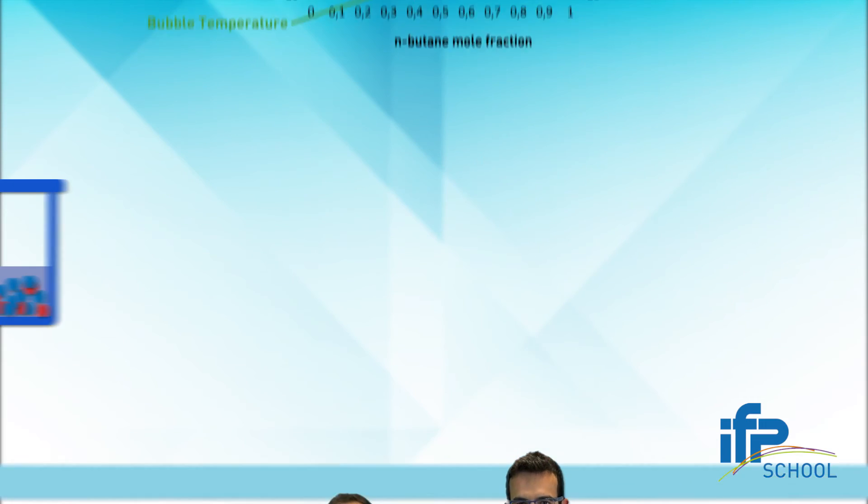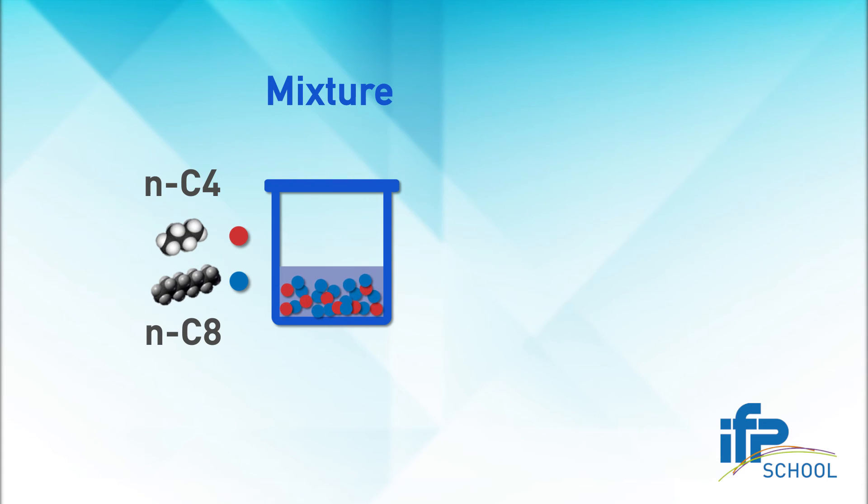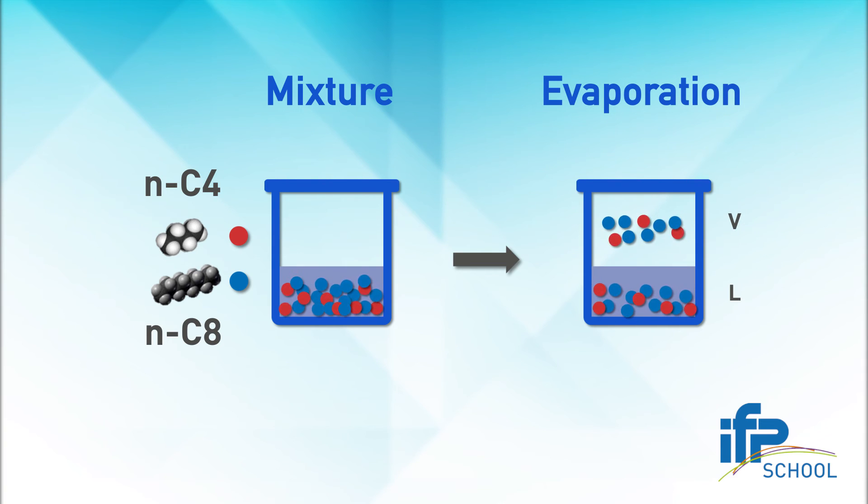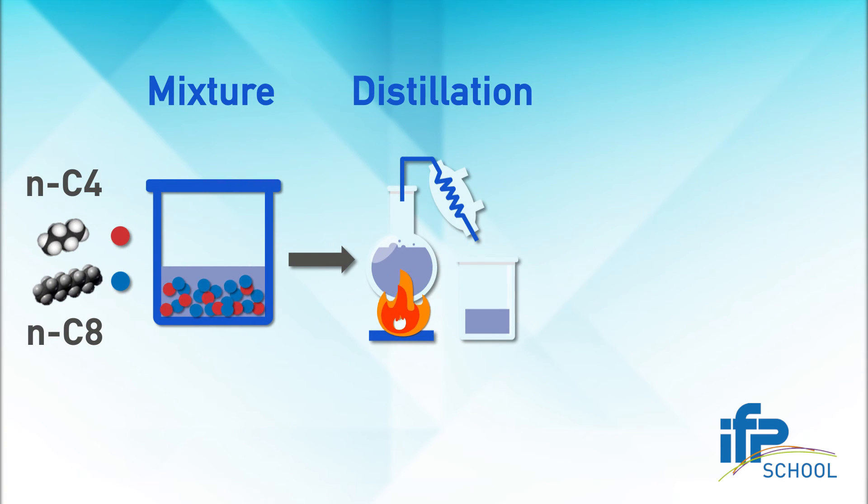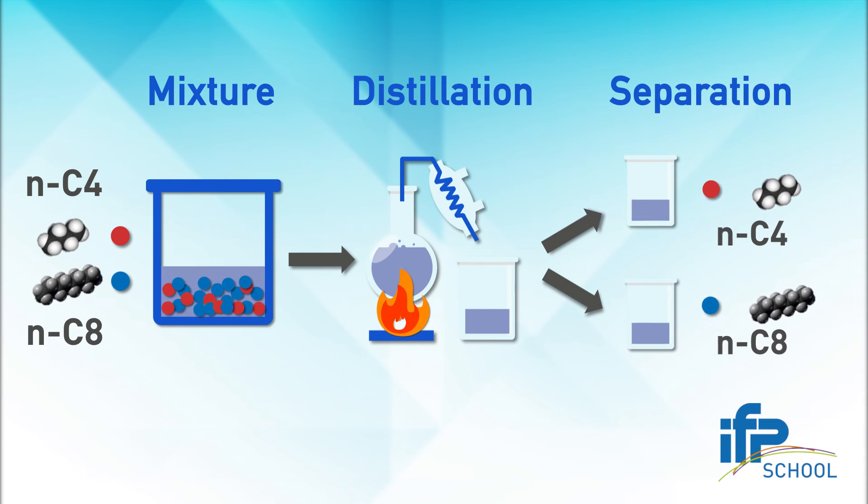Okay, until now we have seen that the mixture can be composed of many components and will have different behavior depending on its mixture composition. But I was told that it is possible to separate two compounds using evaporation. This is called distillation, as for example in refineries where the heavy and light fractions are separated. But tell me, do you know how does it work?